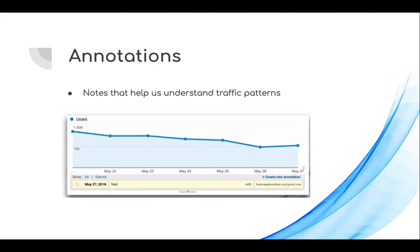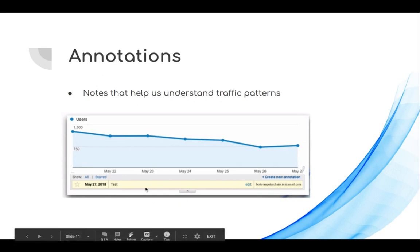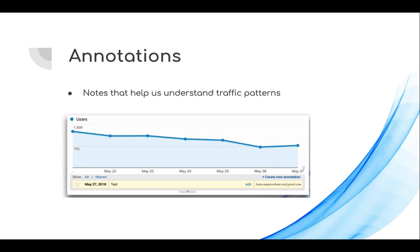The first term is annotations. Annotations are notes that help us understand traffic patterns. You can enter an annotation inside your analytics account. For example, if there is a traffic spike on one of the days and that spike is because of an offline campaign you ran, you might not be able to understand why the spike occurred if you are looking at your analytics account 6 months or 1 year down the line. Annotations help you record why a traffic spike occurred.